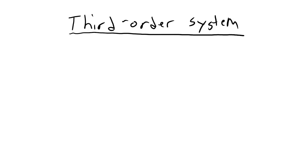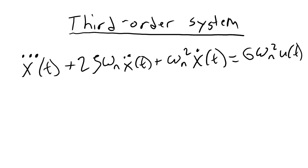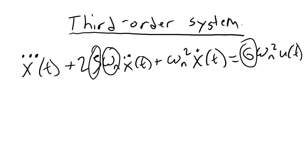Lastly, let's look at the equation for a third order system. The equation for a third order system looks just like the equation for a second order system, except we have one additional derivative on the output signal x(t). Here also we only have three constants: the damping ratio zeta, the natural frequency omega_n, and the gain g. If we could find values for these three constants, we would have a complete model for our third order system.